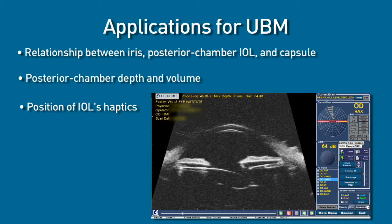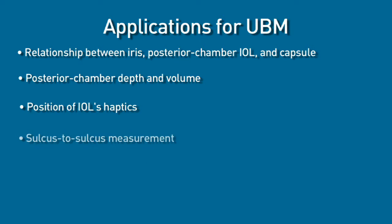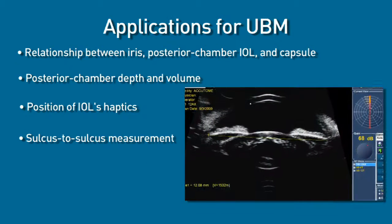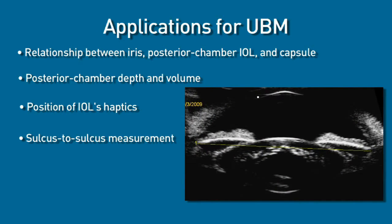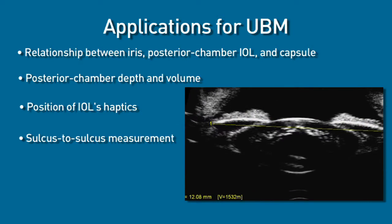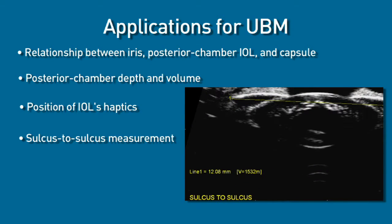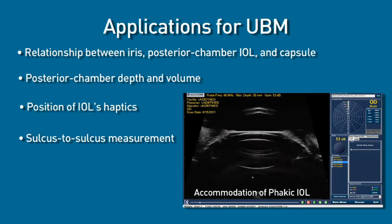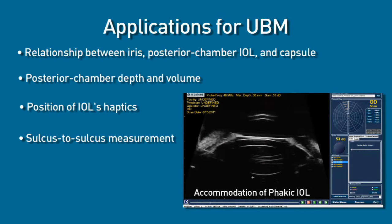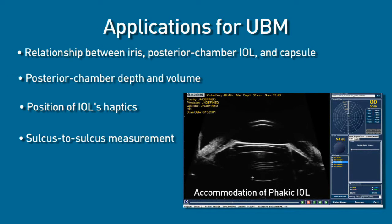In cases that poorly dilate, this really helps us understand whether the loops are in the bag or out of the bag — it's been very helpful in that regard. It is also helpful in measuring sulcus-to-sulcus diameter for ICL implantation, and as mentioned, in our studies for dysphotopsia.